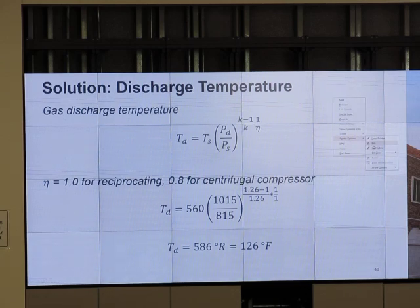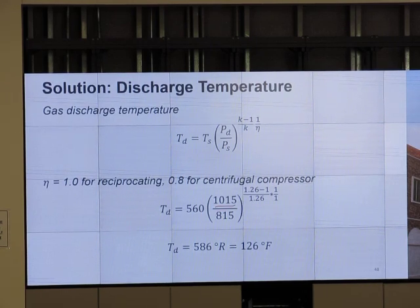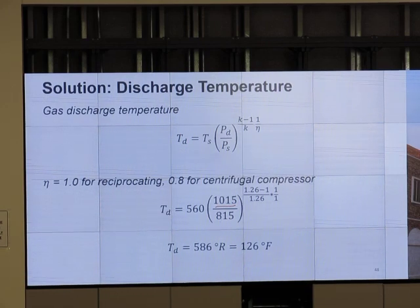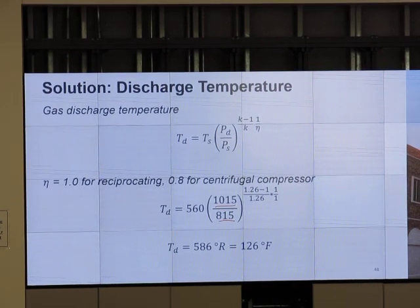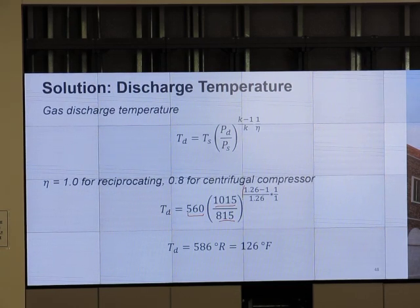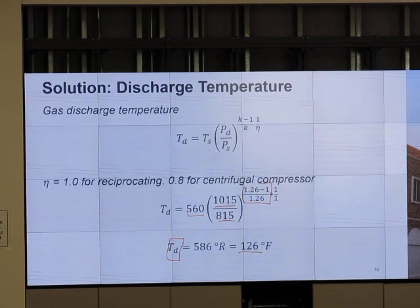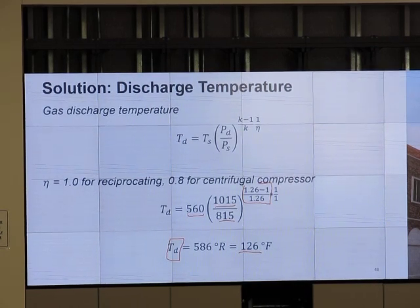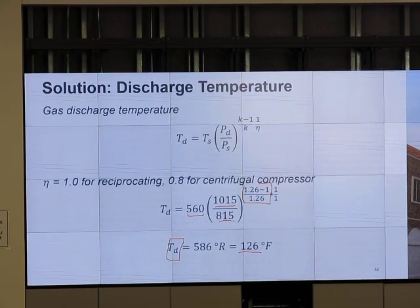Put the numbers in. The trick here is do everything in PSIA. Step 1, convert everything into PSIA. That's why it's 815, not 800. And convert temperature into Rankine. Convert temperature ratio, substitute the value in, we get discharge temperature 126 Fahrenheit. Is it too hot? No, it's not too hot. Too hot means more than 250 Fahrenheit. We don't want it to go more than 250 Fahrenheit.